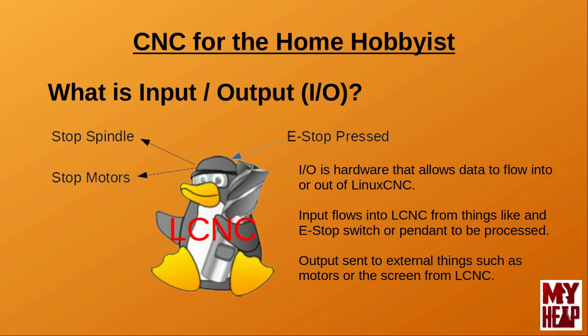In your everyday computing, you make use of input and output devices. Some of these devices are strictly input — for example, the keyboard and the mouse — while others are only output, like your monitor and a printer. Additionally, there are some devices that are used for both input and output, like the network card or a modem. The idea to take away here is that the computer receives information from input devices, like the keyboard, and sends data to output devices, like putting a character on the monitor.